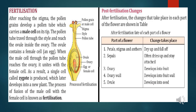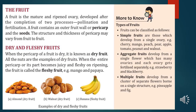After fertilization, changes take place in every part of the flower. Petals, stigma, and anthers dry up and fall off. Sepals often dry up and stay attached. The ovary develops into a fruit, the ovary wall develops into the fruit wall, and the ovule develops into seeds. A fruit is a matured and ripened ovary formed after pollination and fertilization.